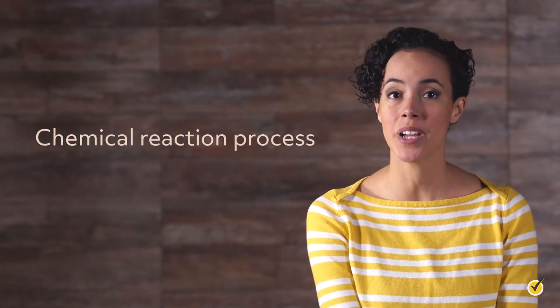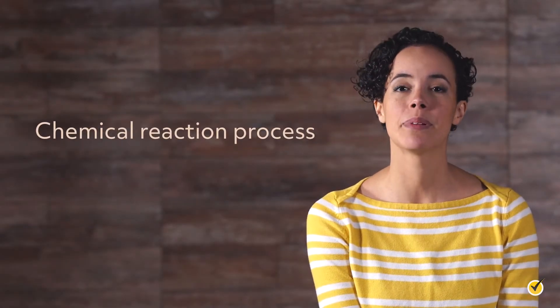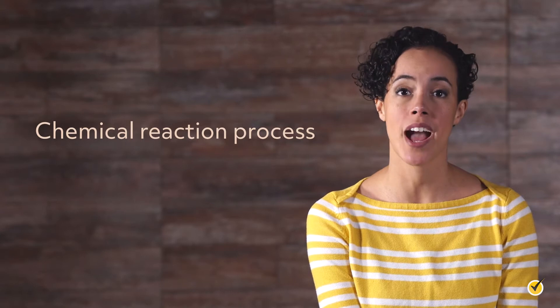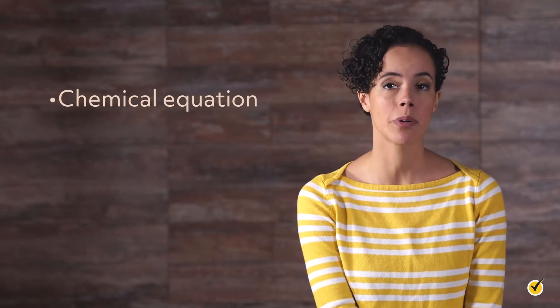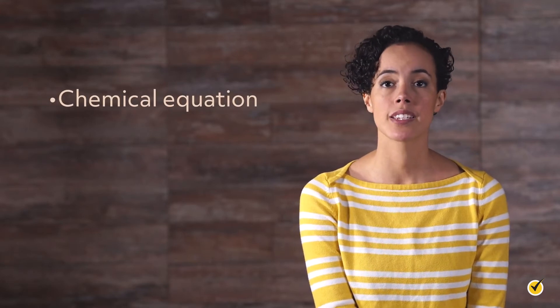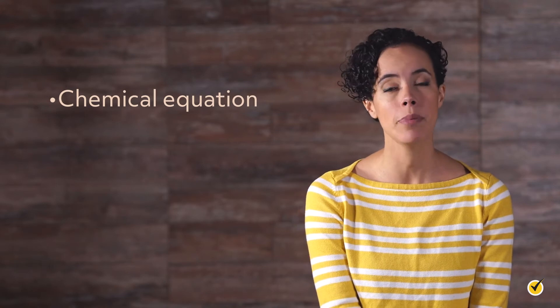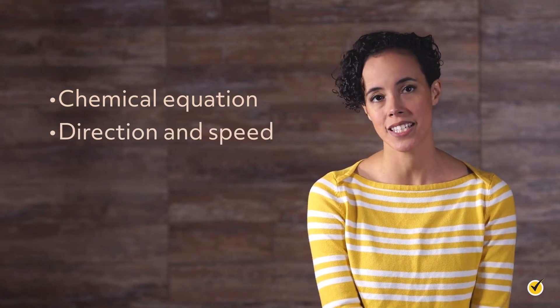Hi, and welcome to this video on the chemical reaction process. Put simply, chemical reactions are the breaking and forming of bonds, which typically entail the rearrangement of electrons. This definition excludes nuclear reactions. We'll start by looking at the chemical equation, the standard notation for a reaction, then move on to discuss the more complex concepts of direction and speed.